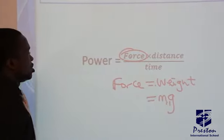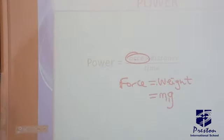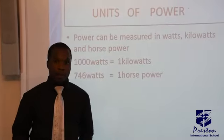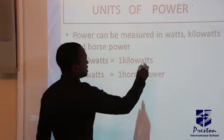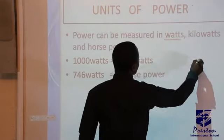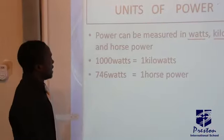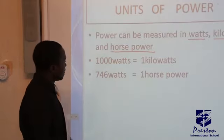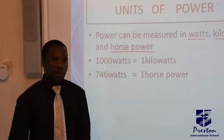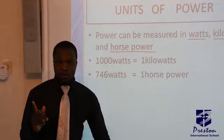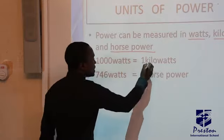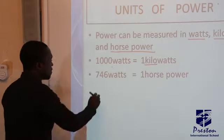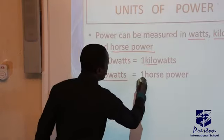Mass times acceleration due to gravity. Now, the units in which you can measure power: power can be measured in watts, it can also be measured in kilowatts, and it can also be measured in horsepower. There is a conversion between watts, kilowatts, and horsepower. Now, 1,000 watts is 1 kilowatt — don't forget, 1 kilo here is 1,000. Then, 746 watts equals 1 horsepower.